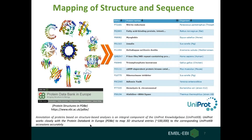We spend a lot of effort mapping 3D structure entries to UniProt entries. On the left hand side we see protein structures in the PDBE database which are mapped to corresponding UniProt entries on the right hand side. In cases where we do not have a UniProt entry for a particular structure, we create a new UniProt entry for it and provide information for that protein.